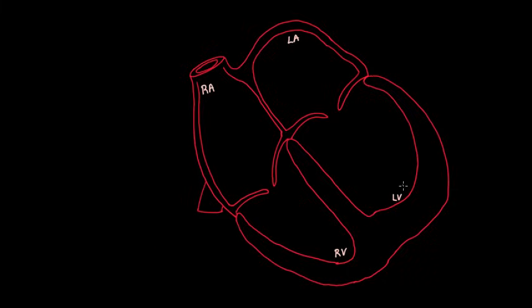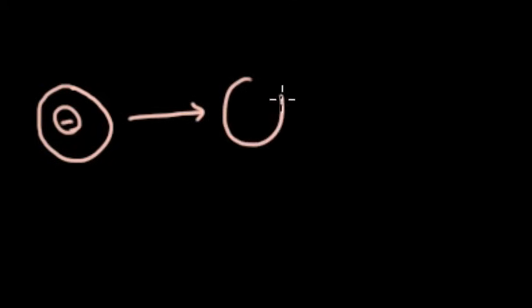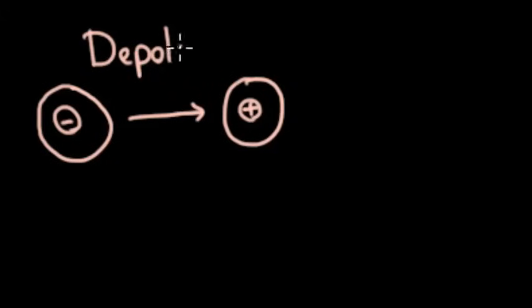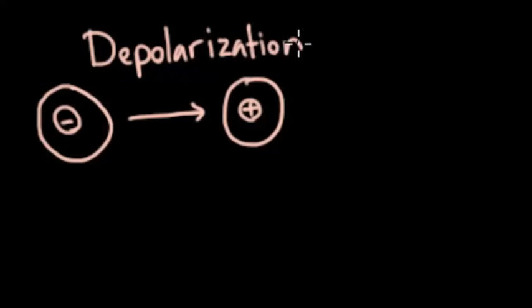To do this right, the heart has got to coordinate how it squeezes. The way that it squeezes down is: you have a cell, and that cell is usually negatively charged, and at some point it will become more positively charged. We call that process depolarization — the idea of going from a negative membrane potential to something much more positive. When you depolarize is when the muscle cell can squeeze down.